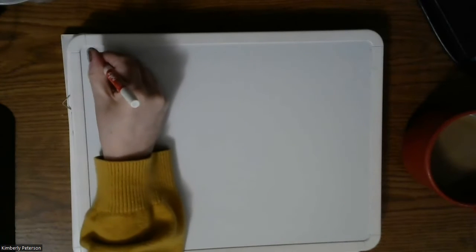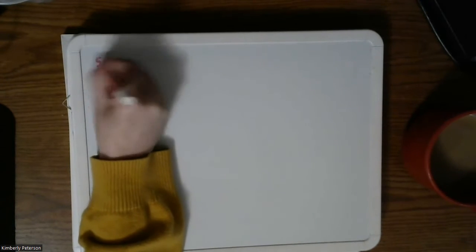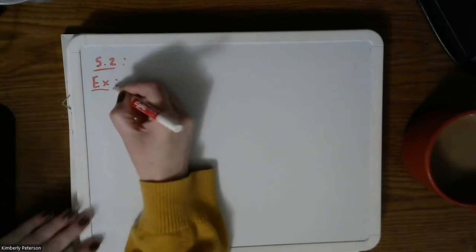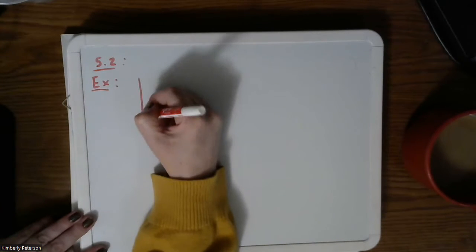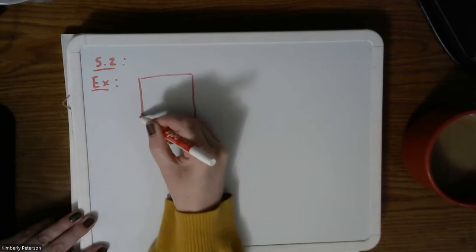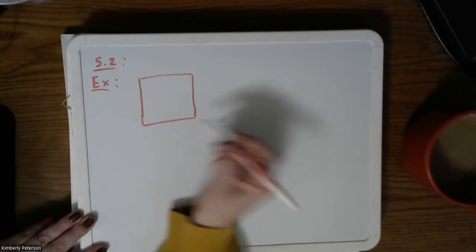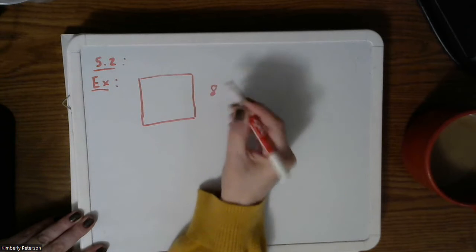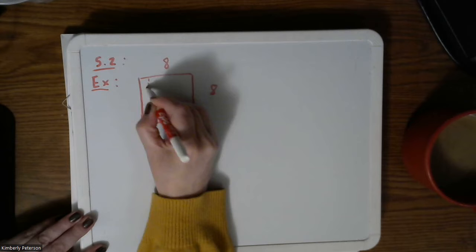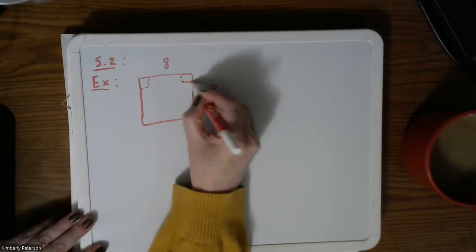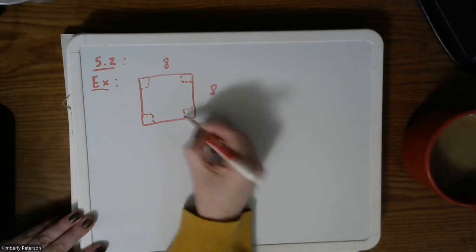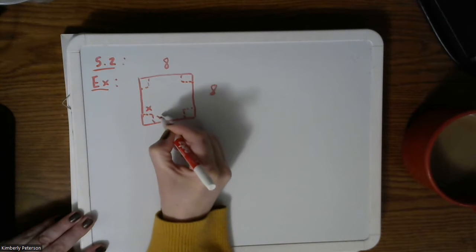If you recall from section 5.2, we were working on an example where I had given you a graph. I had mentioned that you might imagine it as like a pizza box, where these are 8 by 8 units, and then we cut out the corners — all four corners — the same x by x.